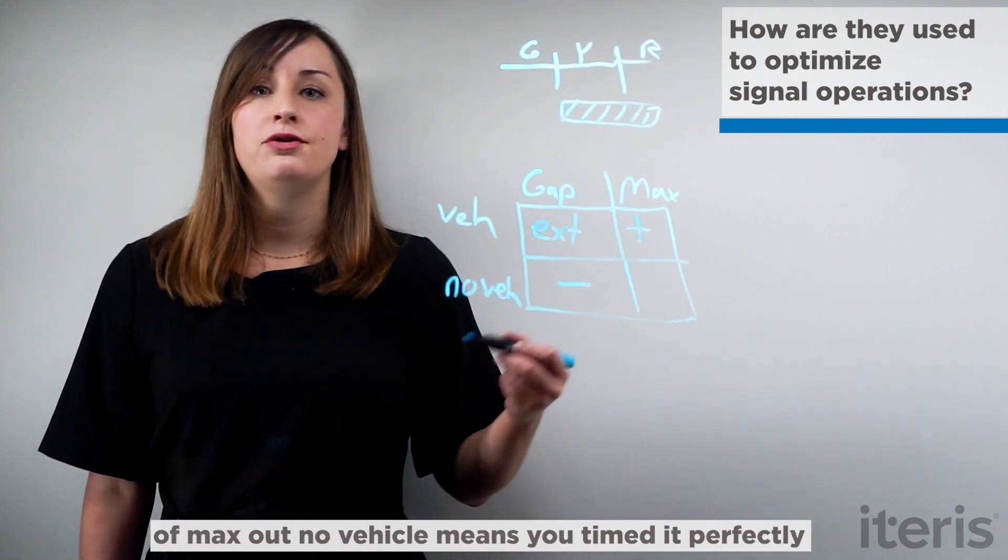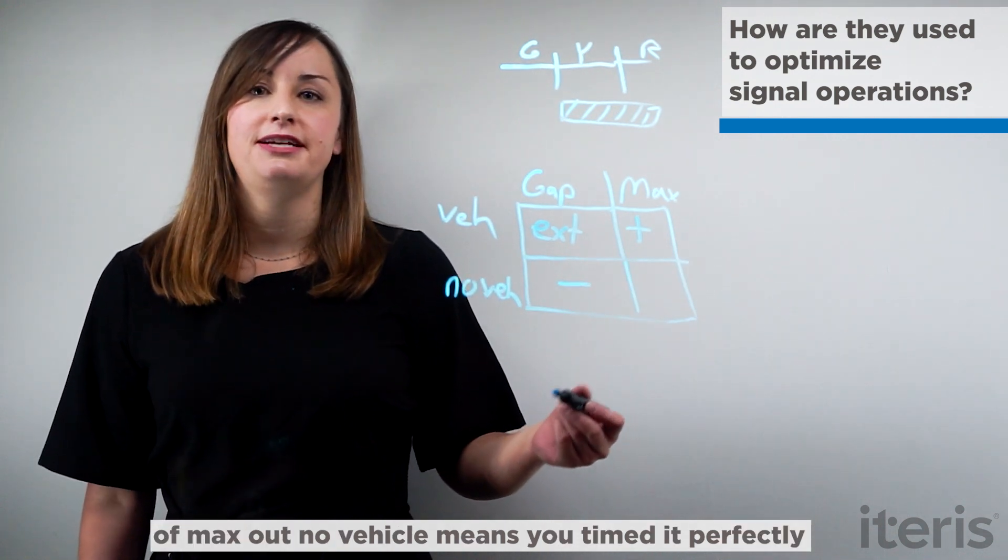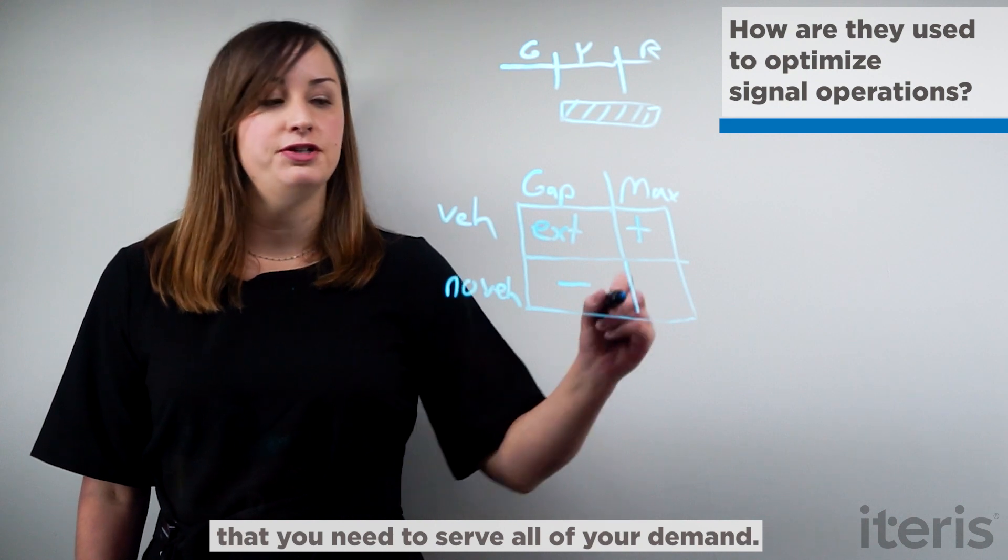And then finally this last category of max out no vehicle means you timed it perfectly. You have the exact amount of green time that you need to serve all of your demand.